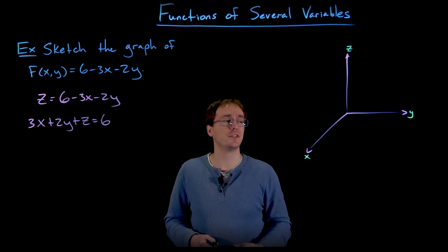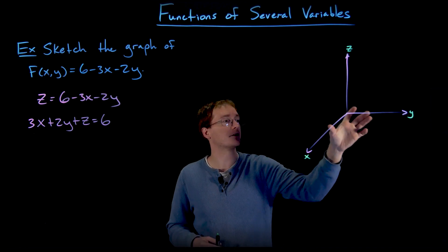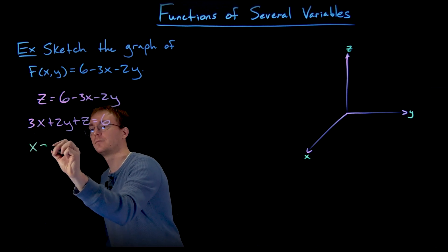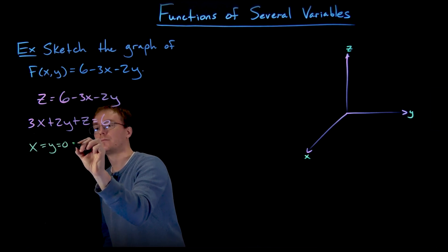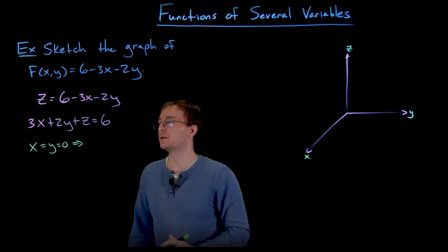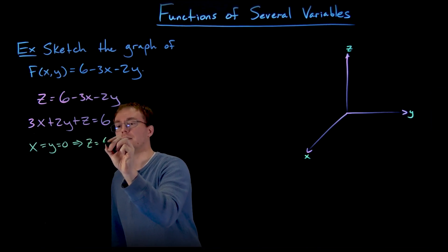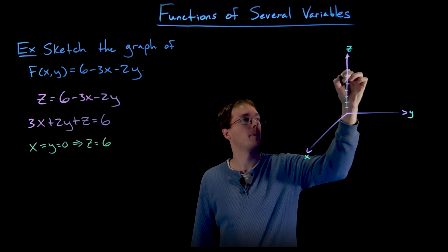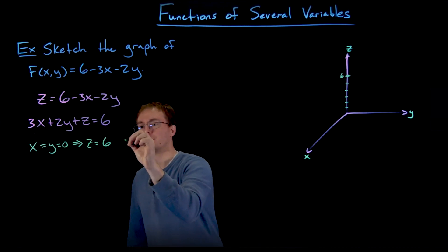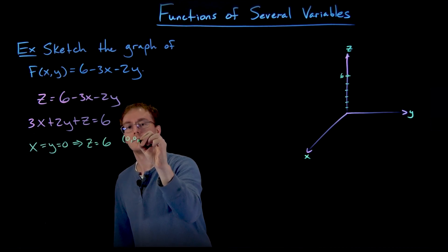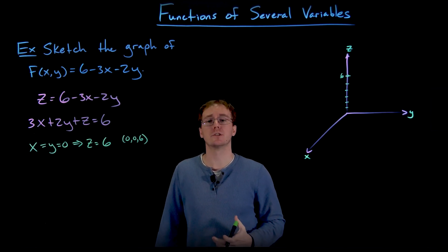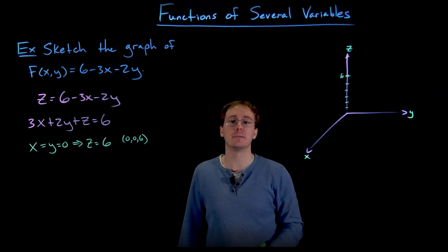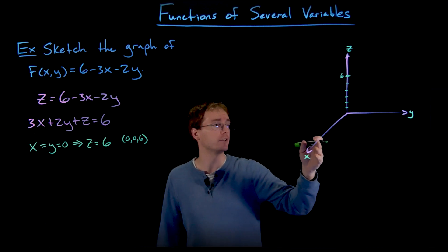Let's start with the z-intercept. If our plane is going to intercept the z-axis, it has to be on the z-axis, which means x and y both have to equal zero. Setting x and y both equal to zero, we can see in our equation that z must be equal to six. So we have the point (0, 0, 6) on the graph of our plane, and I've gone ahead and plotted that on our three-dimensional axis.